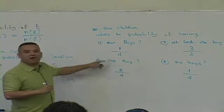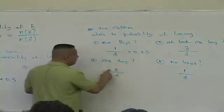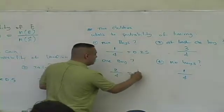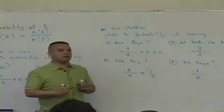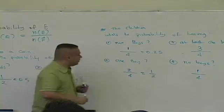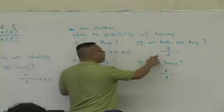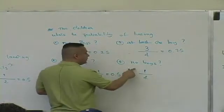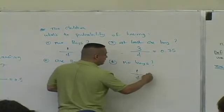What is one-fourth as a decimal? 0.25. What is two-fourths? As a reduced fraction, what is it? It's one-half. Do you have to reduce your fractions? Yes — all fractions need to be reduced to lowest terms. The decimal value? 0.5. Three-fourths — decimal value? 0.75. One-fourth? 0.25.